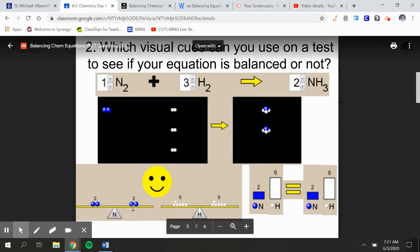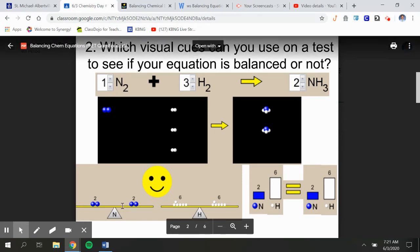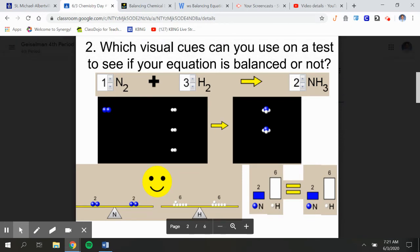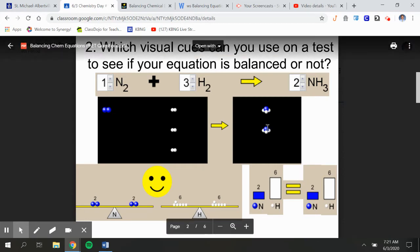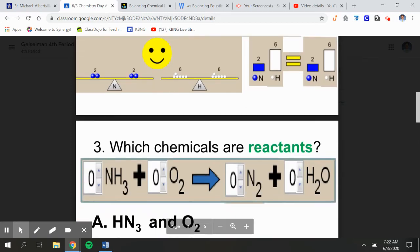The smiley face is always a good indication. Obviously, down here, this board or this balance where you have two and two and six and six showing you that it's balanced is a good way to show you it's a visual cue. And then finally, you can actually go up here and you can count the dots - one, two blue dots, then one, two, three, four, five, six blue dots. Those are the visual cues that you can use today while you go through this.